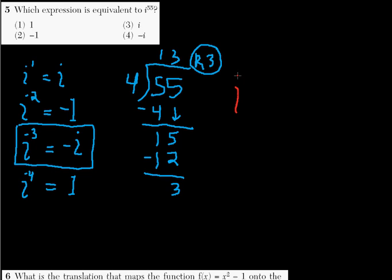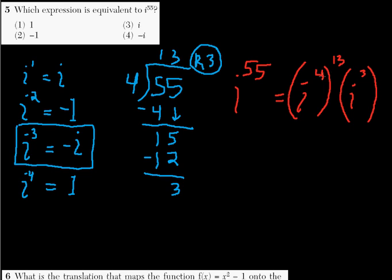If I have i to the 55th, that's equal to i to the fourth power raised to the 13th power, because 4 times 13. And then to that, we're going to add i to the third power. So when you add all these exponents up, you have i to the 52nd here, i to the 52nd times i to the third, and that's i to the 55th.